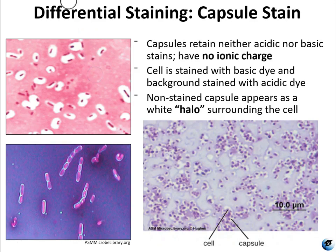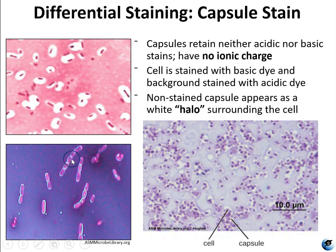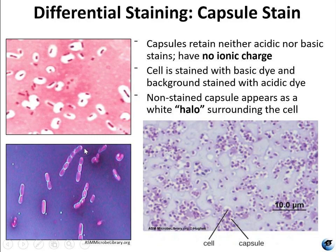Pictured here are some more examples of capsule stains. They can vary in size — some are rather large capsules, some are quite small, and some are in the middle. They will look a bit different based on your cell morphology, but they all appear as a clear halo or a clear circle around your cells.